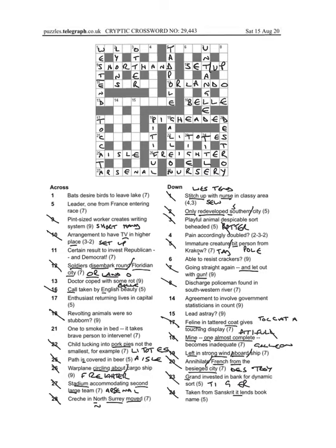And then eight down, discharge policemen. So I thought policemen, look at that, you've got a P there, so it could be COP or PC, but it's not actually in this case, because the southwestern river is the River X, and that gives us plod to go in, PC plod, which gives us a discharge, something discharges, it can explode.